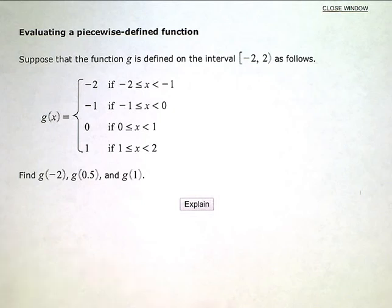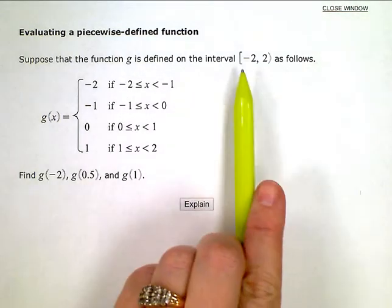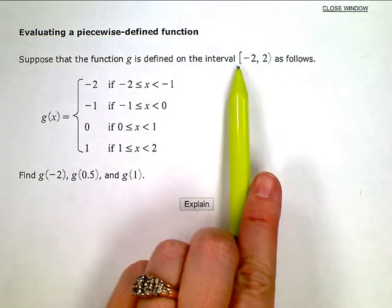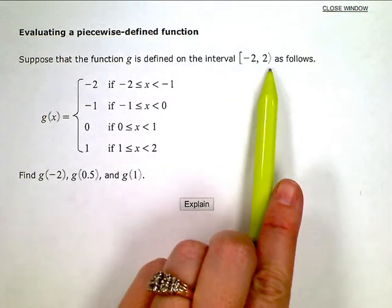Evaluating a piecewise defined function. Suppose that the function g is defined on the interval negative 2 to 2, including negative 2, not including 2, as follows.